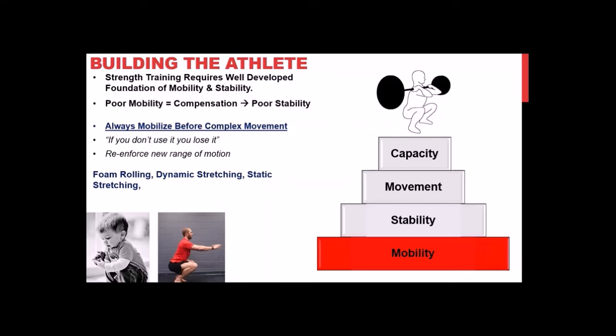A good example: a toddler can squat all the way to the floor with heels flat in an upright position for hours. Compare that to an adult who has to lift his heels because he's lost ankle flexibility. Somewhere between ages five or six and twelve or thirteen, there's often a marked loss in mobility.